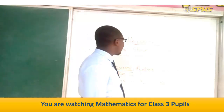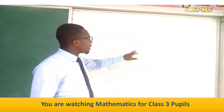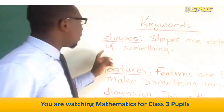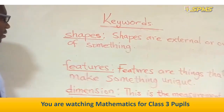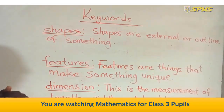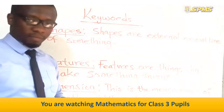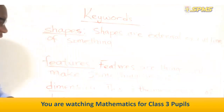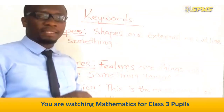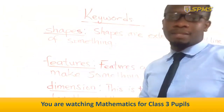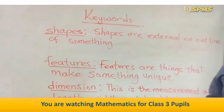Let's look at the meaning of these words. Shapes are the external or outline of something. Features are things that make something unique. Dimension is the measurement of length, width and height. As we go along in this lesson, we will be meeting these words.